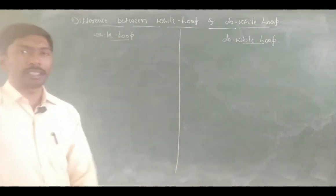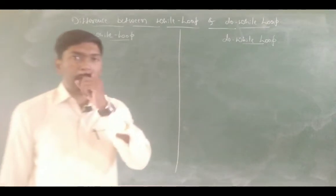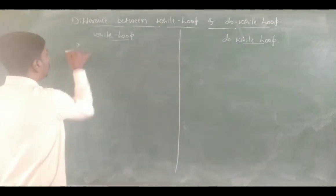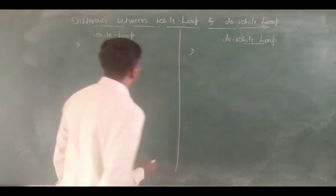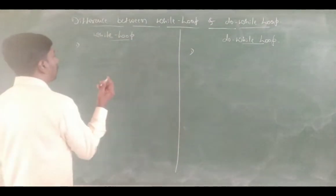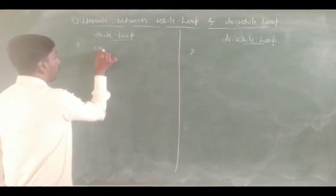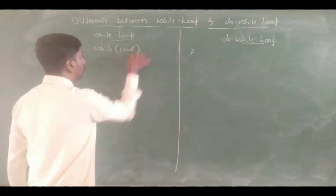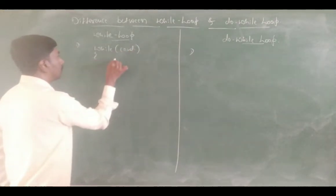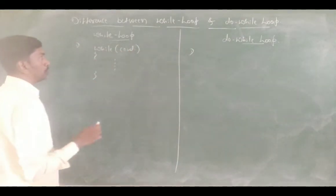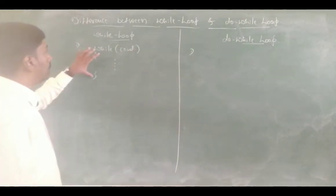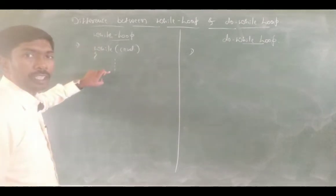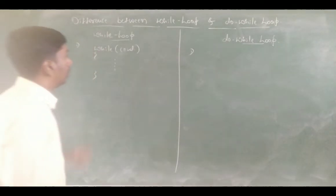Remaining everything will be easy. Let us see the first one — while loop and do while loop. First of all, the usual syntax: while and the condition. I wrote some statements and close. This is the while syntax: initialization, while condition, some statements, increment or decrement.